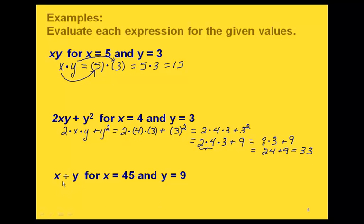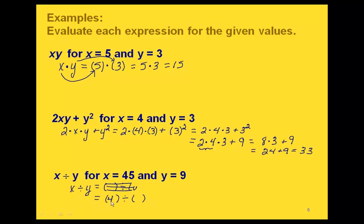Now a division example: x divided by y, with x equals 45 and y equals 9. Using parentheses, we replace x with 45 and y with 9. So we have 45 divided by 9, which gives us 5.